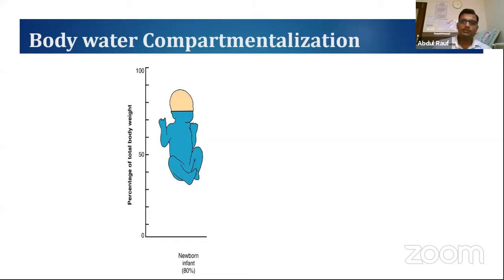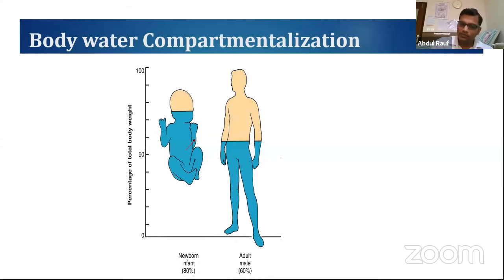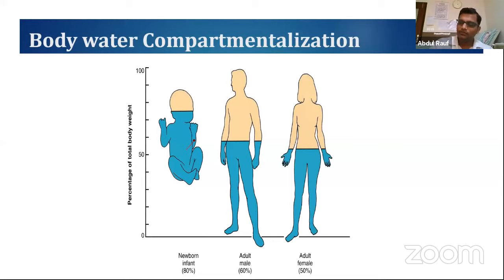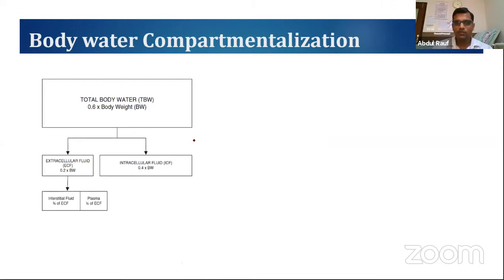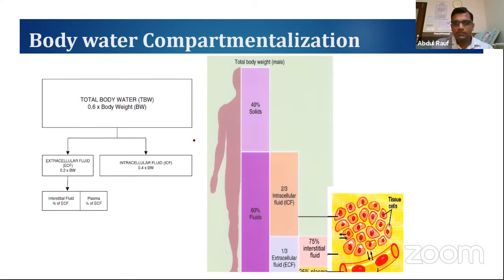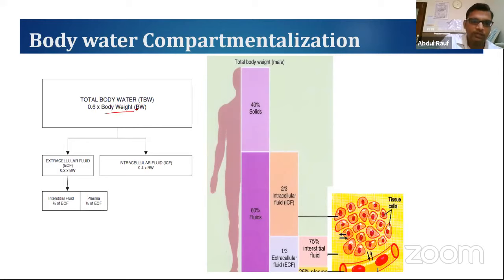Coming to body water compartmentalization: in a newborn child, 80% of total body weight is water. In an adult male it's around 60%, and in an adult female, because of the larger fat proportion, 50% of body weight is water. Out of the total body water — which is 60% of body weight — 20% of body weight is extracellular and 40% is intracellular. The extracellular includes interstitial fluid and plasma.